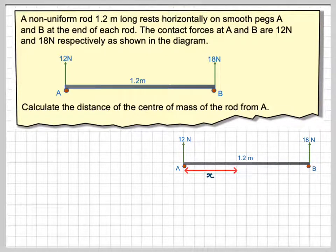So what we need to say is that the centre of mass is x metres away from A and the weight of the rod will be mass times gravity.